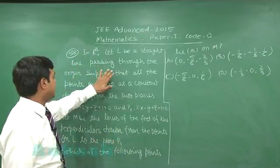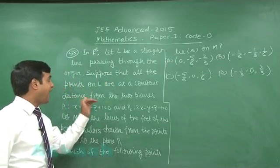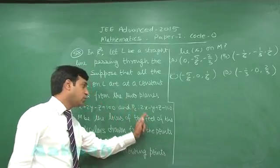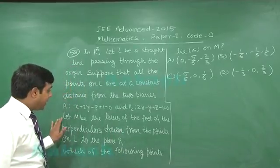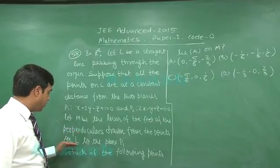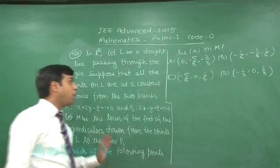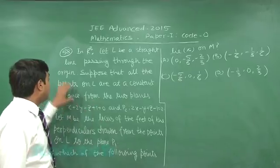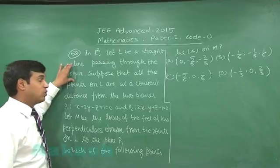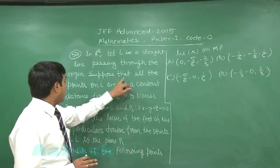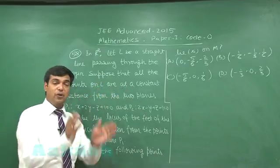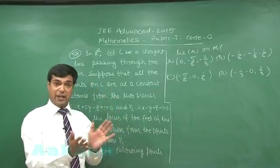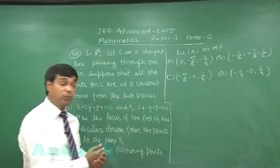Let L be a straight line passing through the origin. Suppose that all points on L are at a constant distance from two planes: P1: x + 2y − z + 1 = 0 and P2: 2x − y + z − 1 = 0. Let M be the locus of feet of the perpendiculars drawn from the points on L to the plane P1. Which of the following points lie on M? Since all points on L are equidistant from two planes, clearly line L lies on the angle bisector of these two planes.